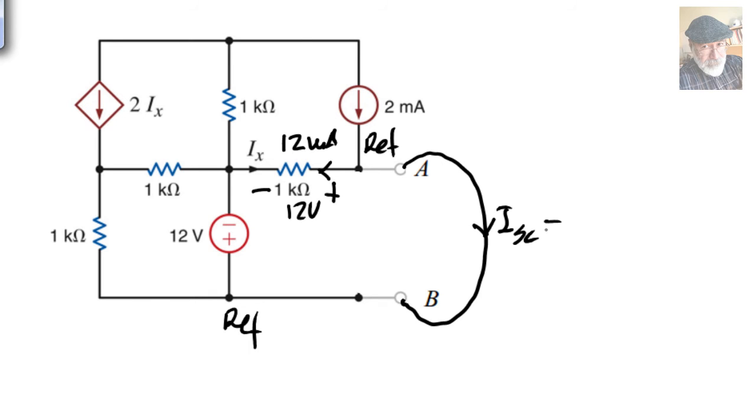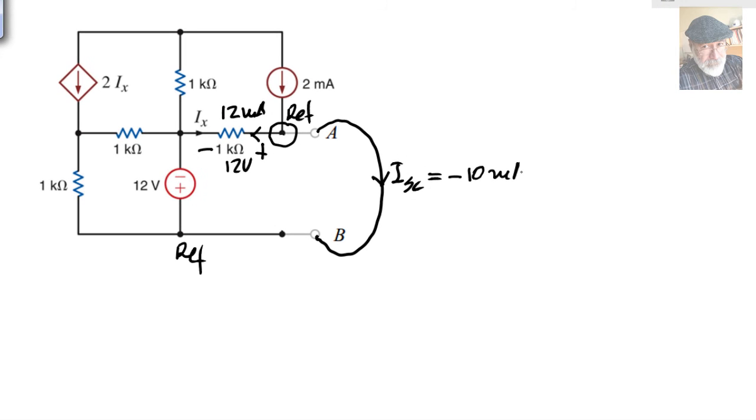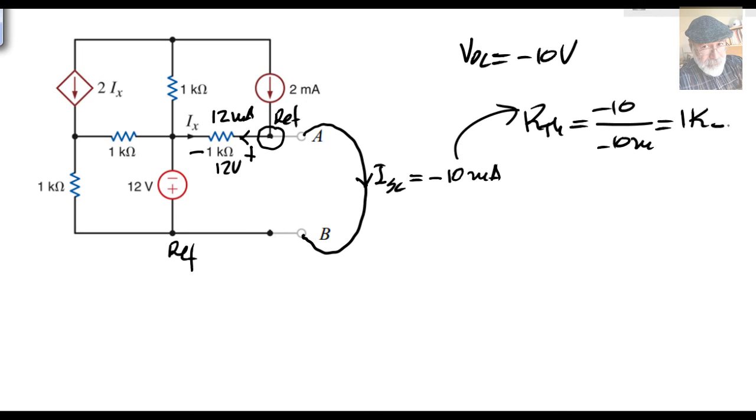And this current has to be, applying a KCL equation here, just negative 10 milliamps. Easy! That is the short circuit current. So we have from before that the open circuit voltage is negative 10 volts, and this one allows us to say that R Thevenin is negative 10 divided by negative 10 milliamps. That is 1 kilo ohm.